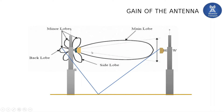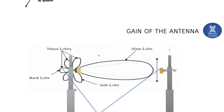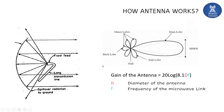Now let's look at antenna gain. Since it is a passive device, gain here means the ability of the microwave antenna to focus the beam in a narrow direction — that is the ultimate aim of the antenna. The gain formula is: 20 log(8.1 × d × f), where d is the diameter of the antenna and f is the frequency of the microwave link.